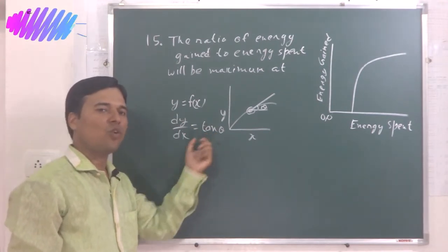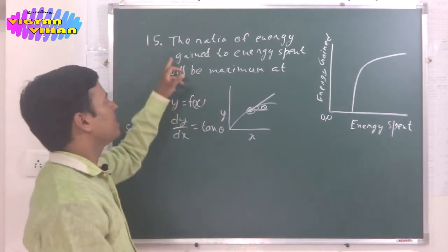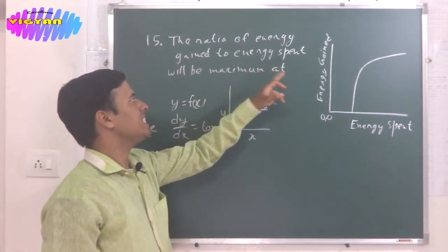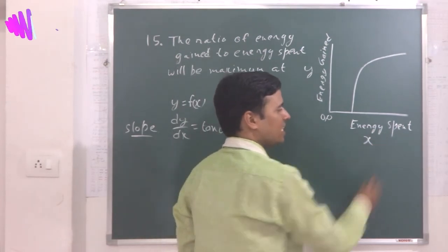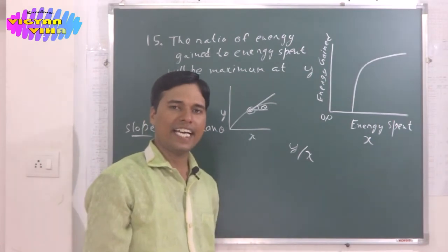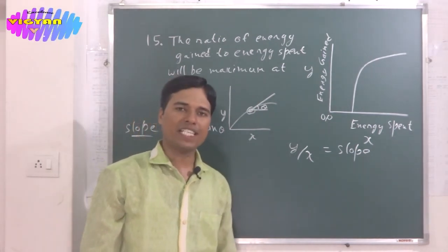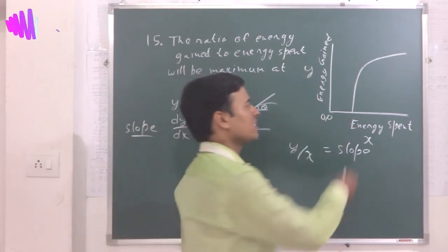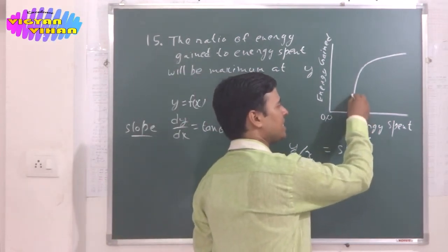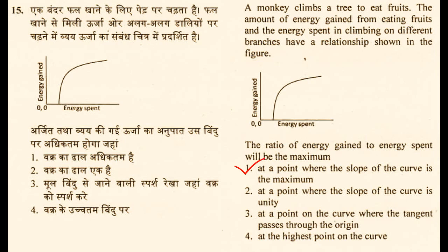Revisiting the problem: energy gained is y and energy spent is x, so y/x is maximum where the slope of the curve (dy/dx) is maximum. Looking at the curve, the slope is maximum in the initial part. The options are: option 1 — at the point where slope of the curve is maximum; option 2 — slope equals unity; option 3 — tangent passes through origin; option 4 — at the highest point. The correct answer is option 1, where the slope of the curve is maximum.